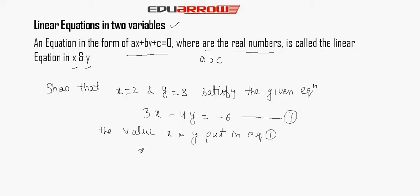3 multiplied by 2 and minus 4 multiplied by 3, because the value of y is 3, equals 6 minus 12 equals minus 6. So x equals 2 and y equals 3 satisfy the given equation.